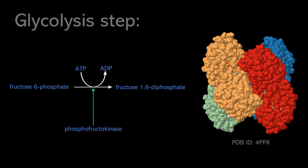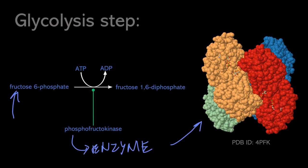To give you an example of what reactions in metabolic networks look like, we have the third step of glycolysis depicted here. At this point, glucose, the starting reactant, has been converted into fructose-6-phosphate. During this reaction, an enzyme — phosphofructokinase, also depicted here using a space-filling model from the PDB — activates the conversion of fructose-6-phosphate to fructose-1,6-diphosphate. This reaction is dependent on ATP, so here you can see that ATP is being converted into ADP, because a phosphate group from ATP is being transferred to fructose-1,6-diphosphate.